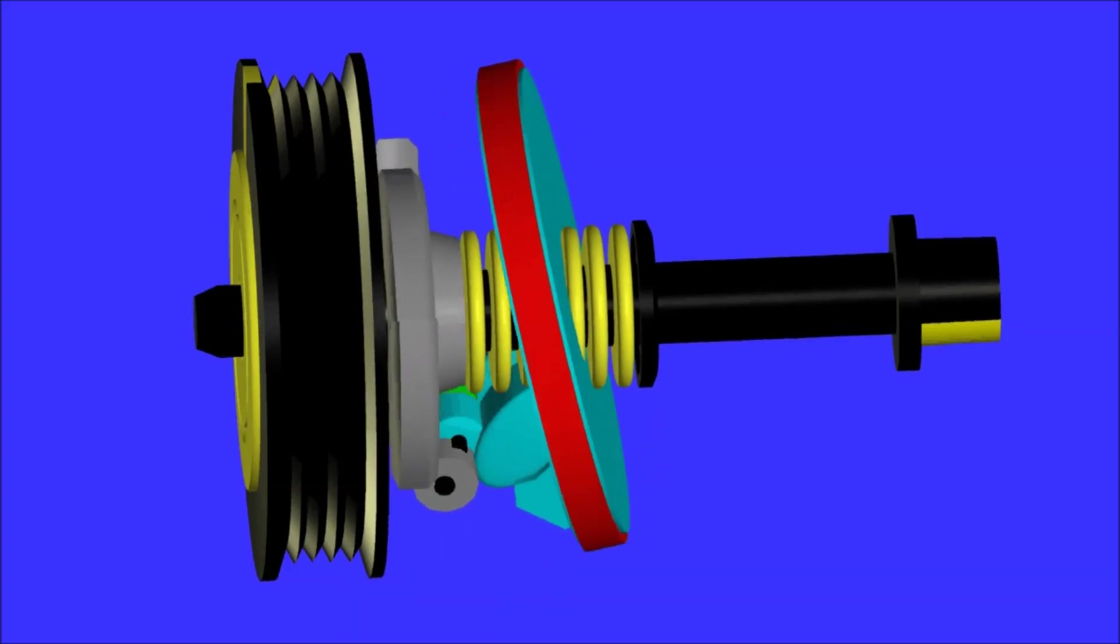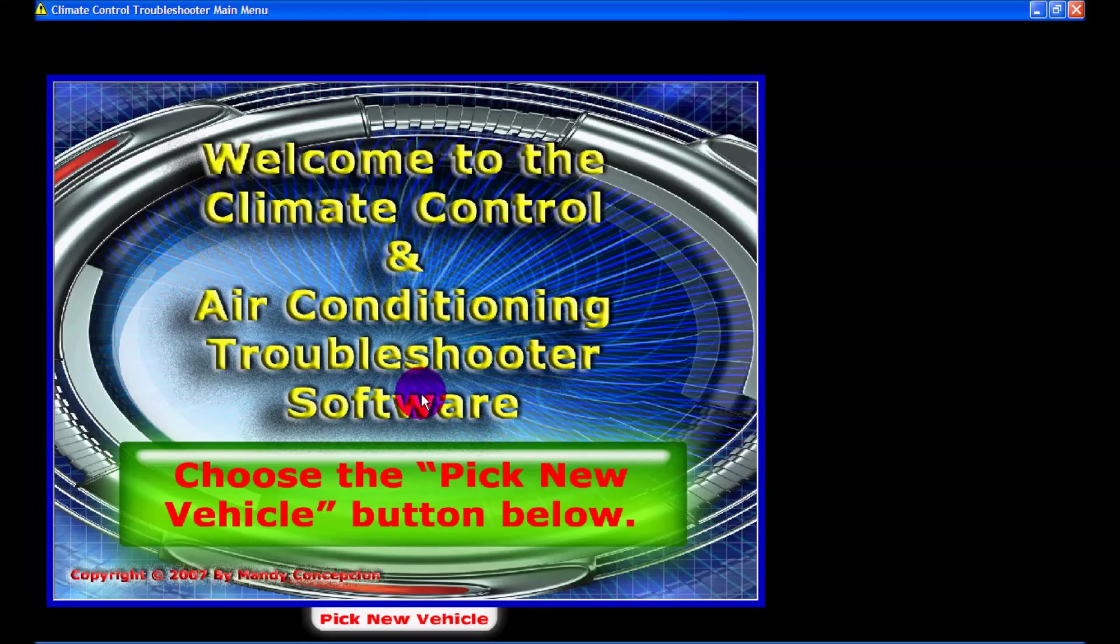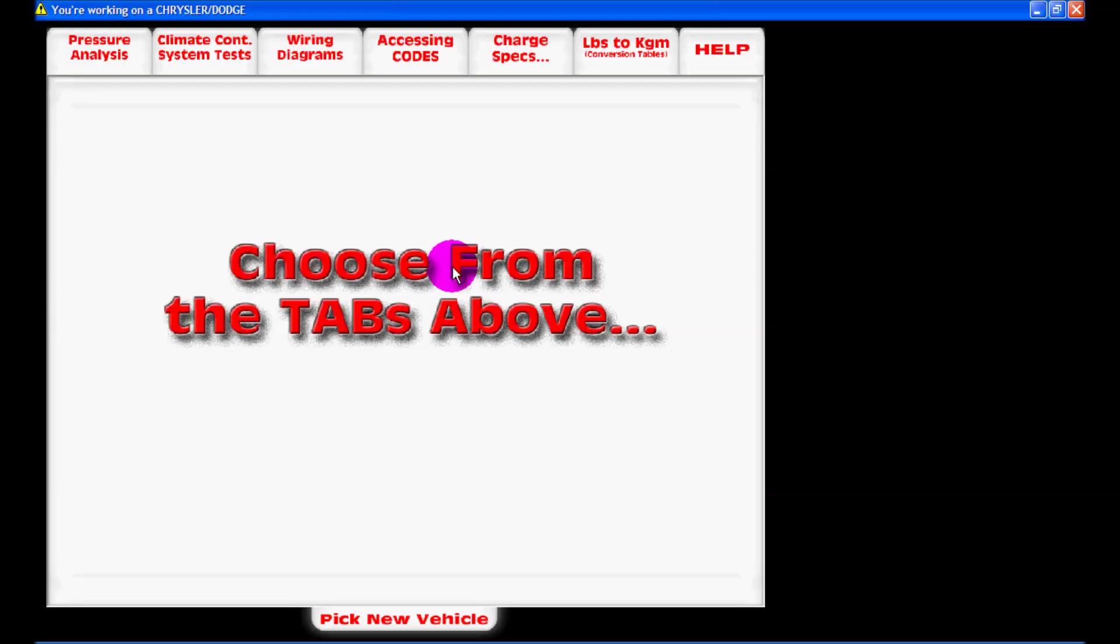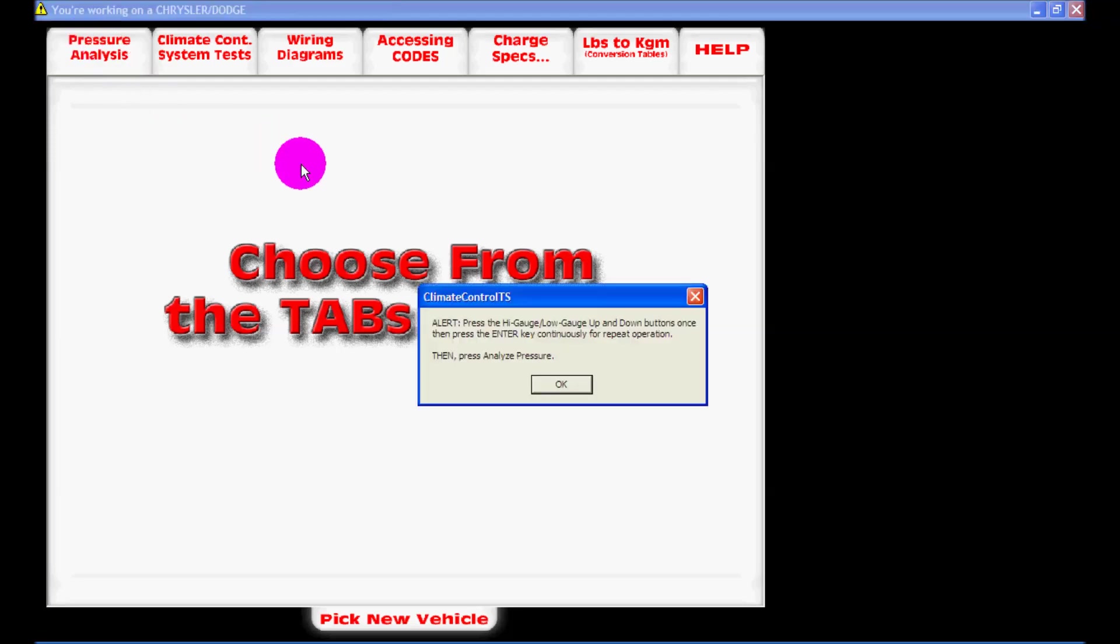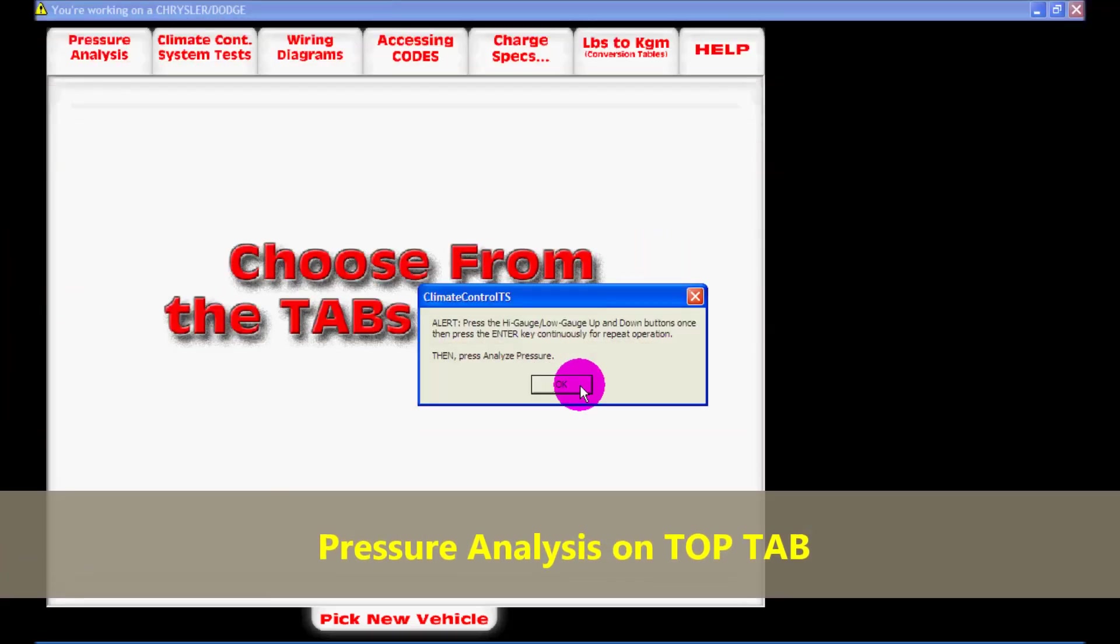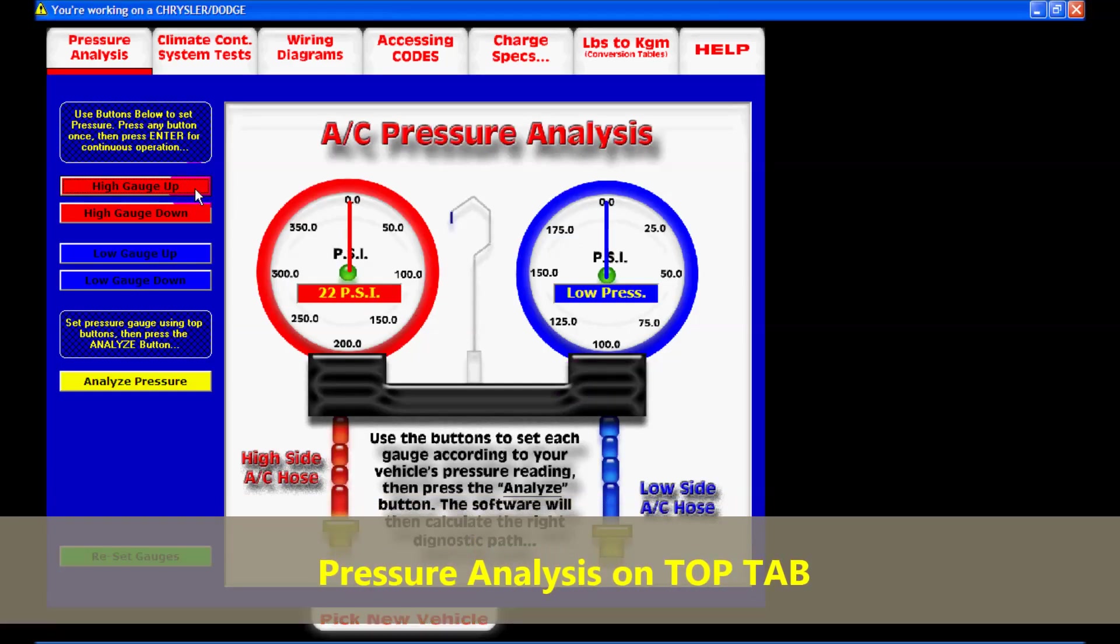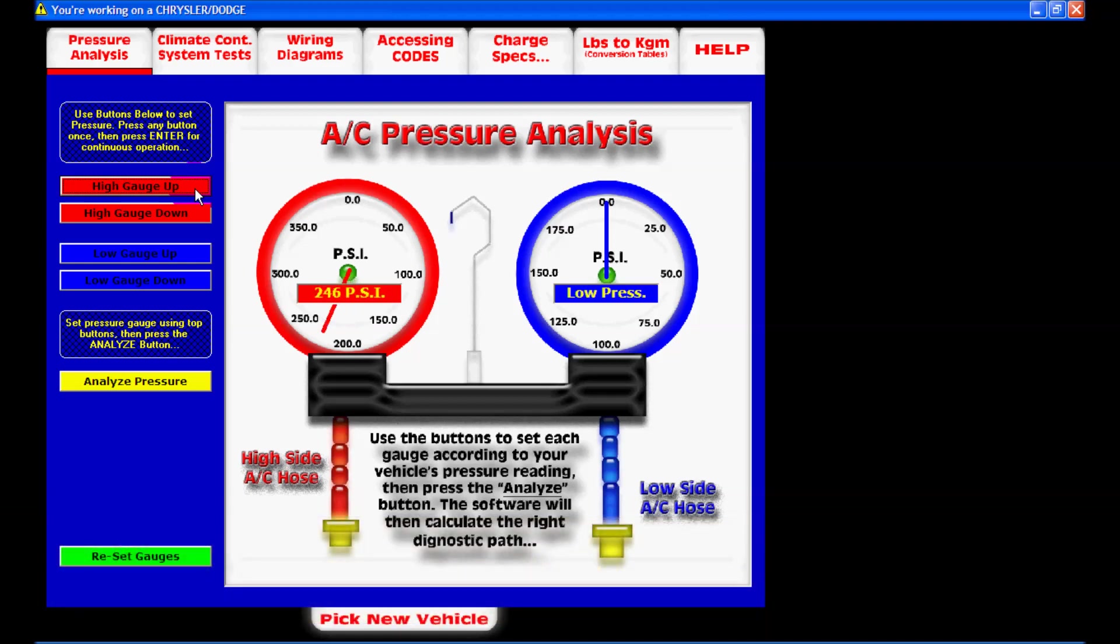Now on screen, as you can see, this is the actual HVAC troubleshooter software that we have on our website. This software has the main feature of pressure analysis. You navigate through the tabs on the top, and using the pressure analysis, you pretty much click on the high pressure gauge or the low pressure gauge, and then click on return or the enter key.